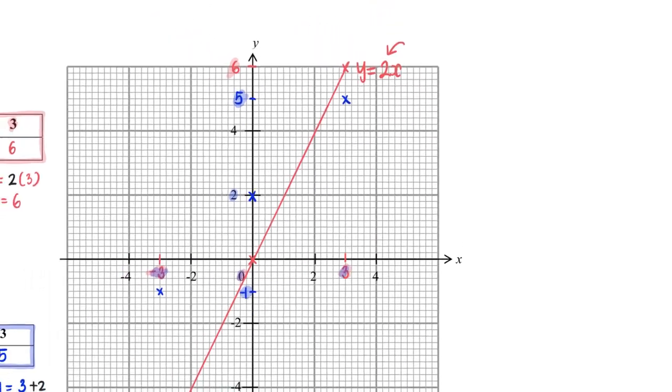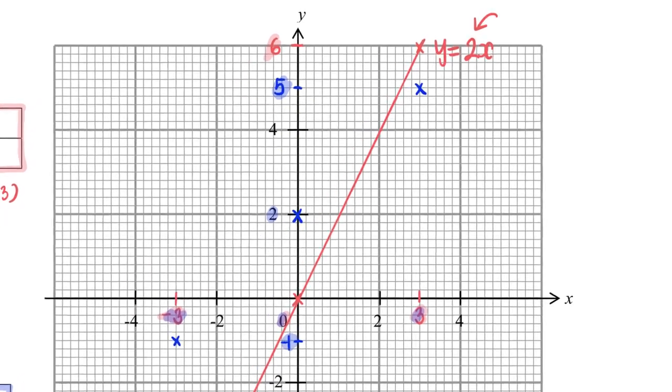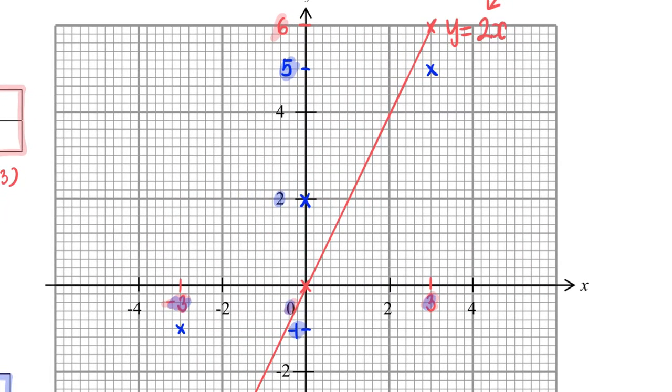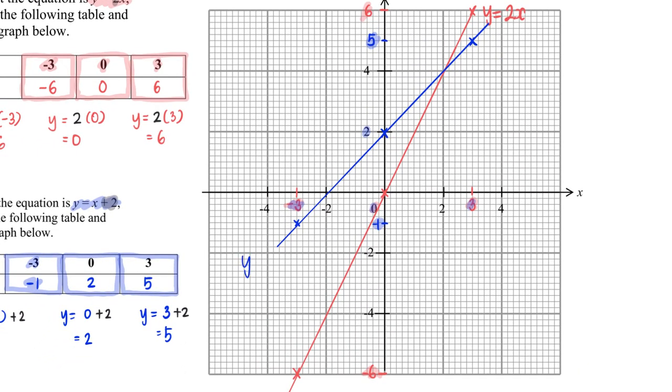And therefore, with these three points being plotted, I will then take out my ruler again and join the three points using this ruler. And last but not least, we do need to write down the equation of the line.